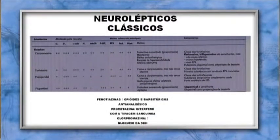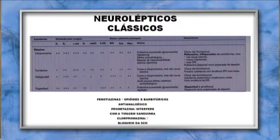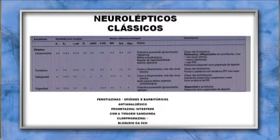Os neurolépticos clássicos incluem clorpromazina, haloperidol e flupentixol. Para o anestesiologista, é importante saber que os fenotiazínicos (clorpromazina) aumentam a ação dos opioides e barbitúricos, têm ação anti-analgésica na presença de dor, e que a prometazina interfere com a tipagem sanguínea. A clorpromazina, quando o paciente está em uso, aumenta o efeito do bloqueio neuromuscular da succinilcolina.